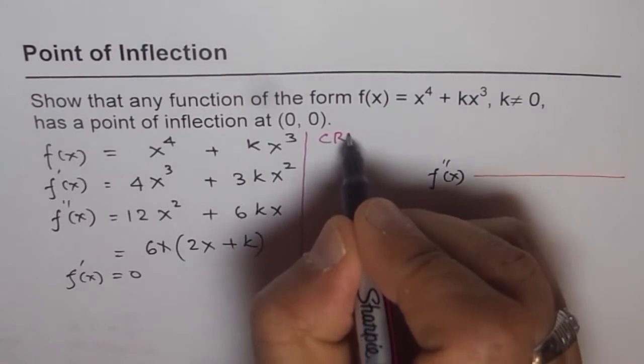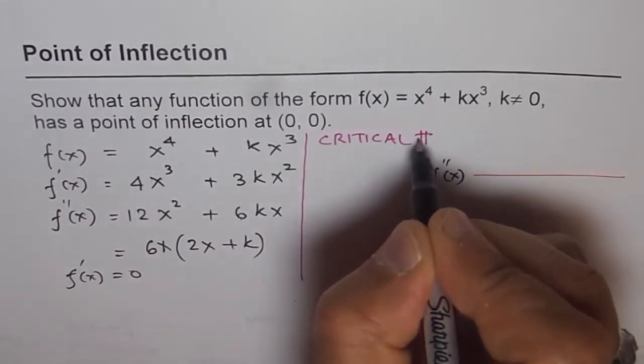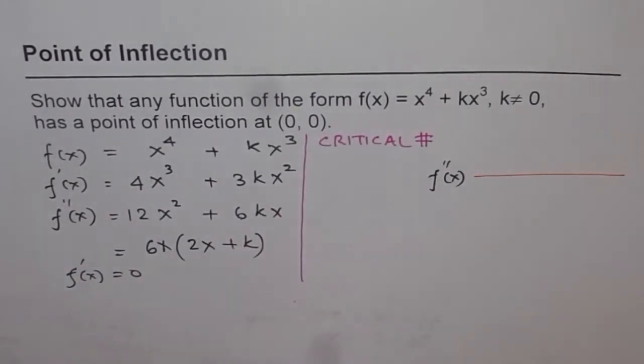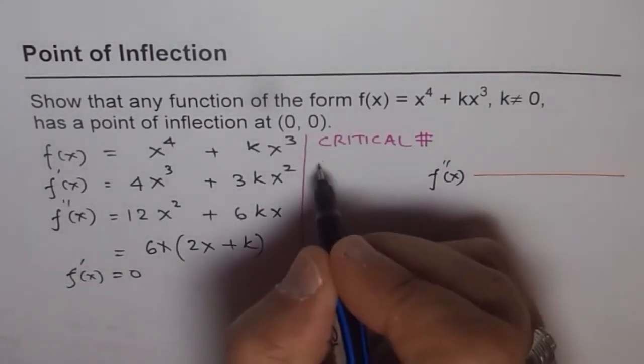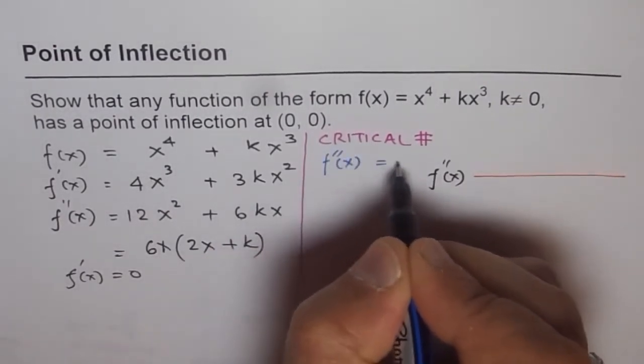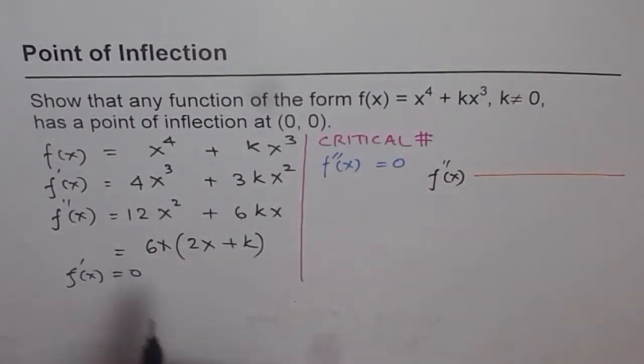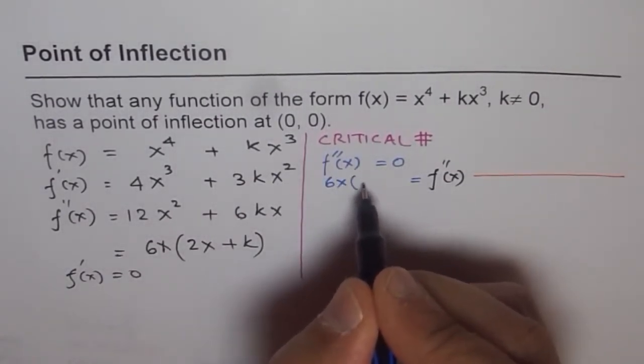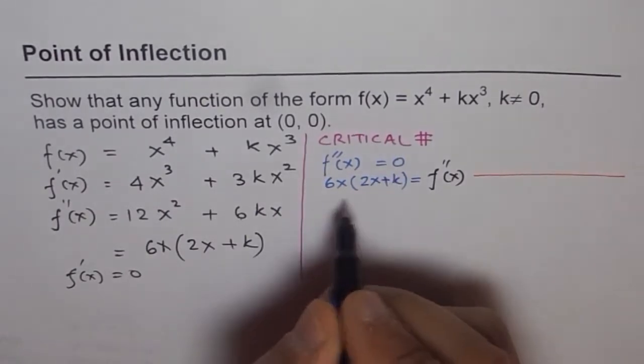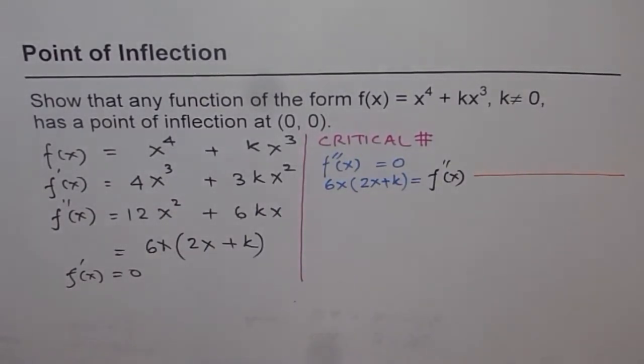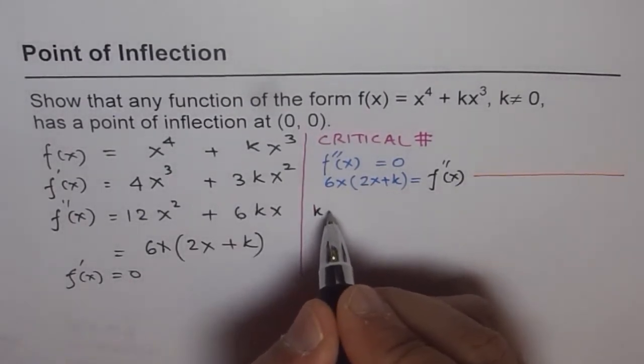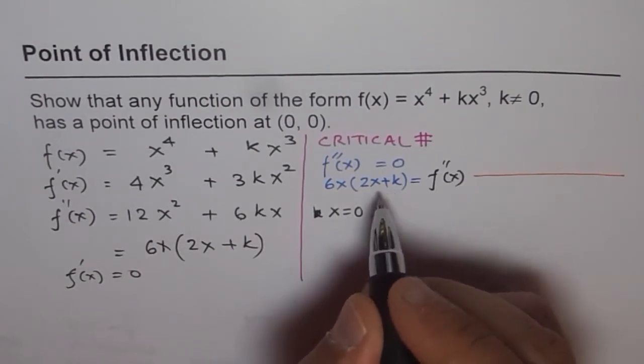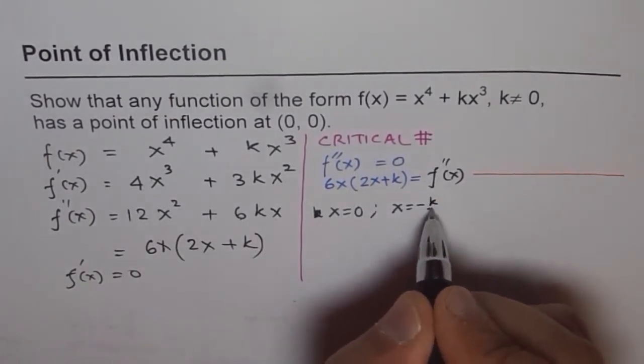So critical number is where f''(x) is equal to 0. So we know f''(x) is actually equal to 6x(2x + k). When is it equal to 0? It is 0 at two points. One, it is 0 at x = 0.